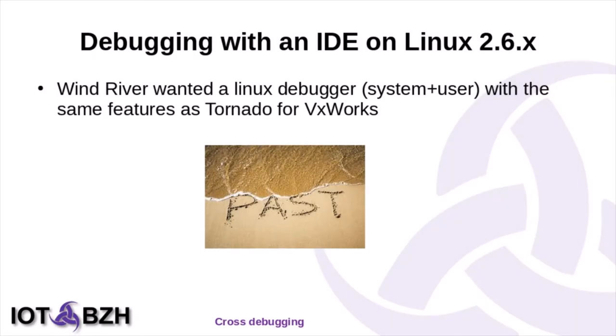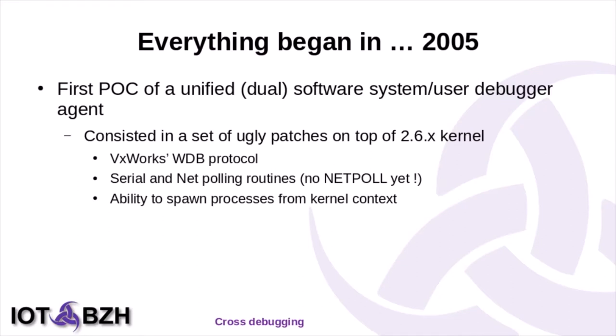The reason I was working on the Linux debugger is that Wind River wanted a debugger for their IDE named Tornado that had the same features as VxWorks. Everything began in 2005. The first proof of concept of a unified software debugger for Linux was dual — it could perform both system and user mode. It was performed a couple of months after the start of 2005, consisting of ugly patches on top of the 2.x kernel, using the VxWorks WDB protocol, serial and netpolling routines, since there was no netpoll API yet. It was also able to spawn processes from the kernel context, which is unusual.